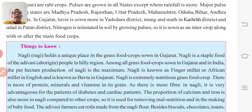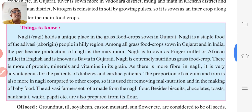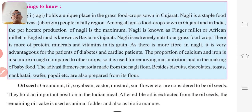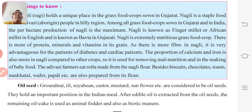The Adivasi farmers eat rotla made from Nagali flour. Besides that, biscuits, chocolates, toast, naan khatai, wafer, papdi, etc. are also prepared from its flour.